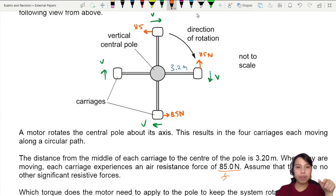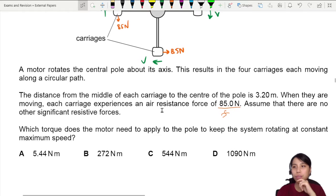So 85 and 85. Okay, we got our diagrams down. Assuming there are no other significant resistive forces.